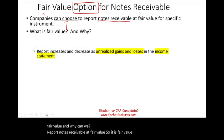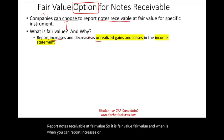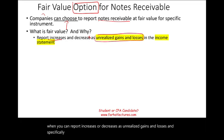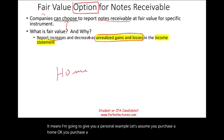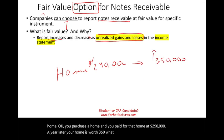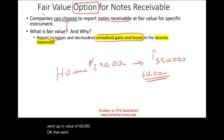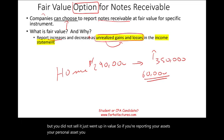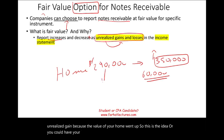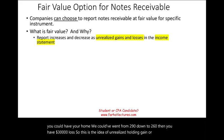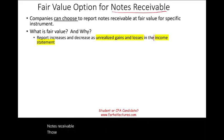Fair value is when you report increases or decreases as unrealized gains and losses — specifically for notes receivable, in the income statement. For example, let's assume you purchase a home for $290,000. A year later, your home is worth $350,000 — it went up $60,000 in value. What you have is an unrealized gain, meaning it went up but you did not sell it. You have the option to report your asset at $350,000 and record an unrealized gain. Or your home could have gone down to $260,000, giving you a $30,000 loss. For notes receivable, those unrealized holding gains or losses are reported in the income statement.